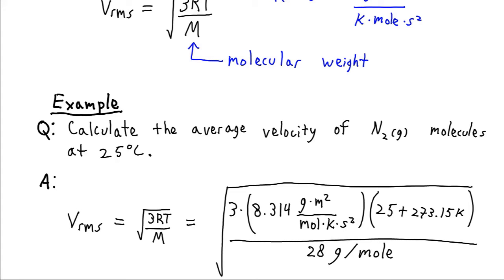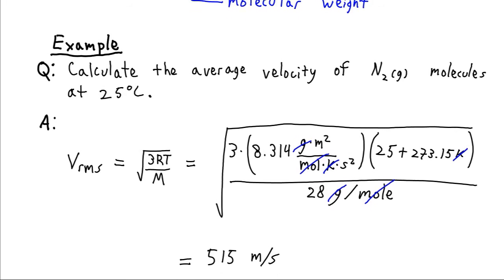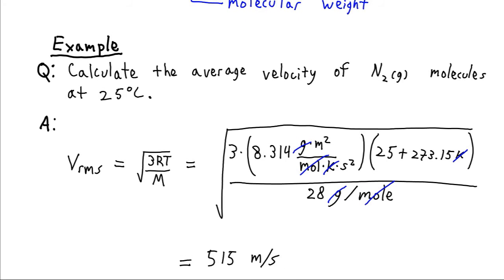And if we check all our units here, see that kelvins cancels out, grams cancels out, moles cancels out. We're left with meters squared divided by seconds squared. When we take the square root of that, we'll just get meters per second, which is a velocity, distance over time. So that's good. We had better get units of velocity in our velocity equation.